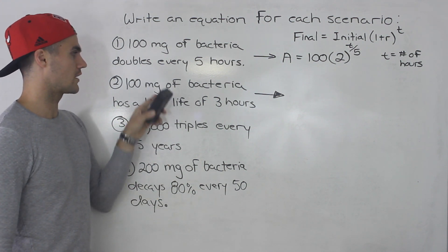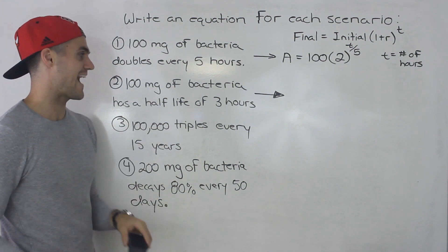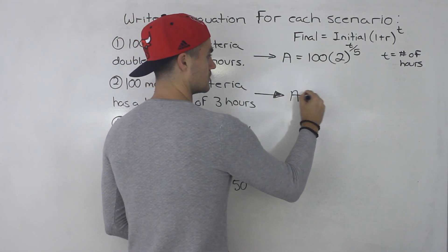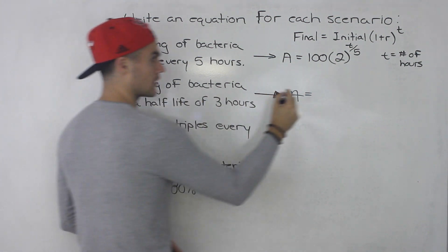So here in the second scenario, we're told that 100 milligrams of bacteria has a half-life of three hours. So final amount is going to be the initial amount, 100.